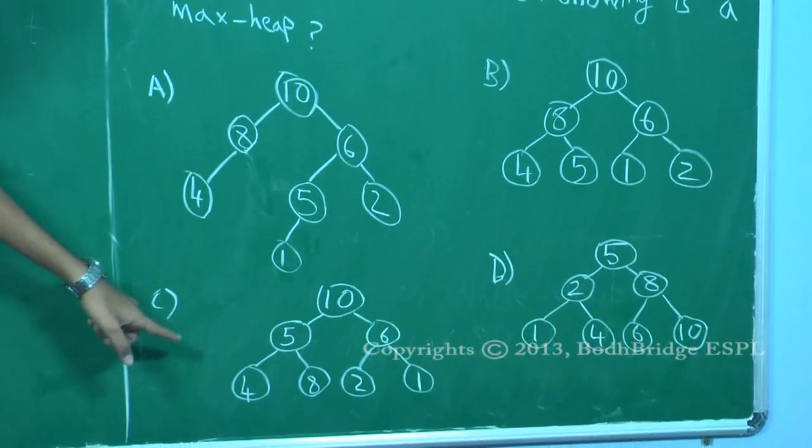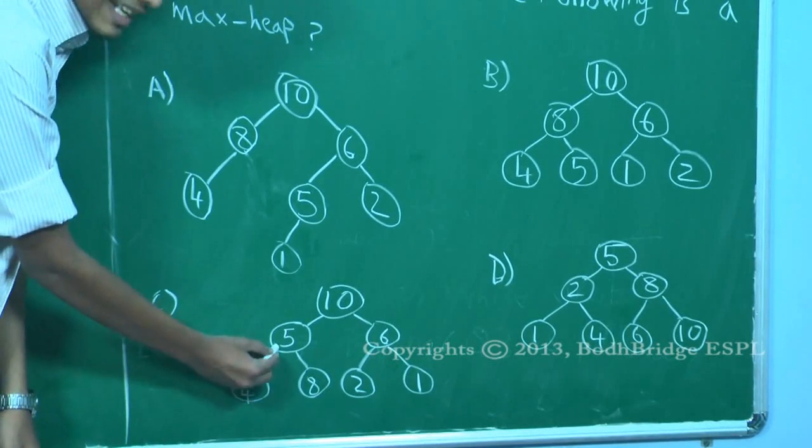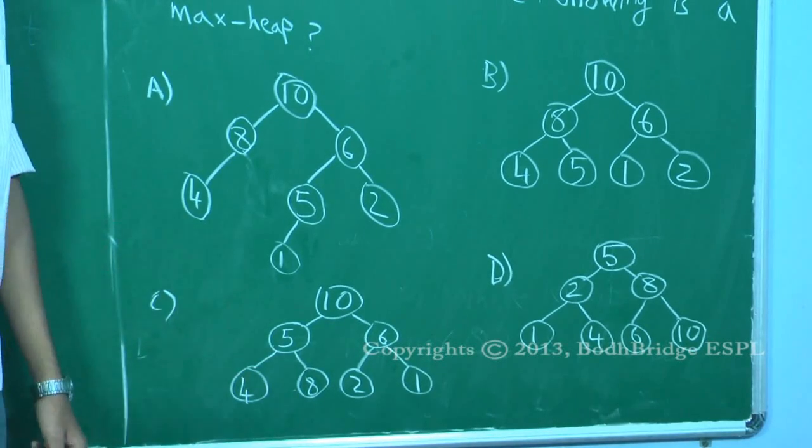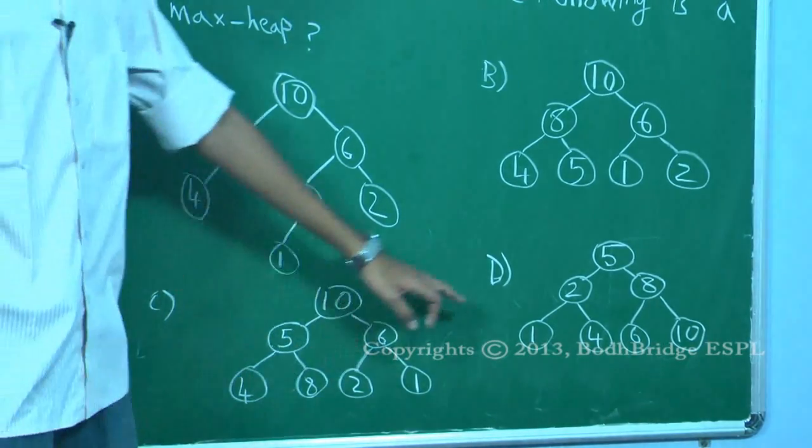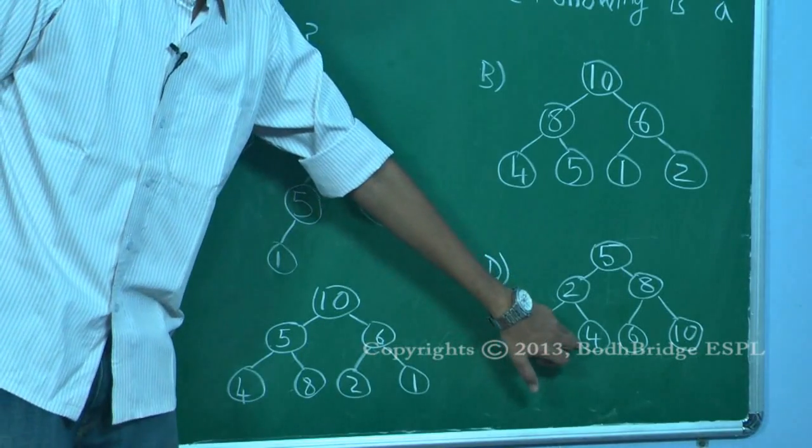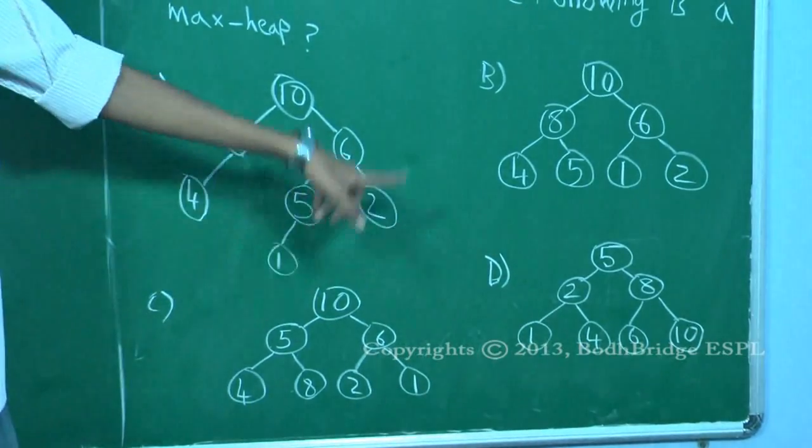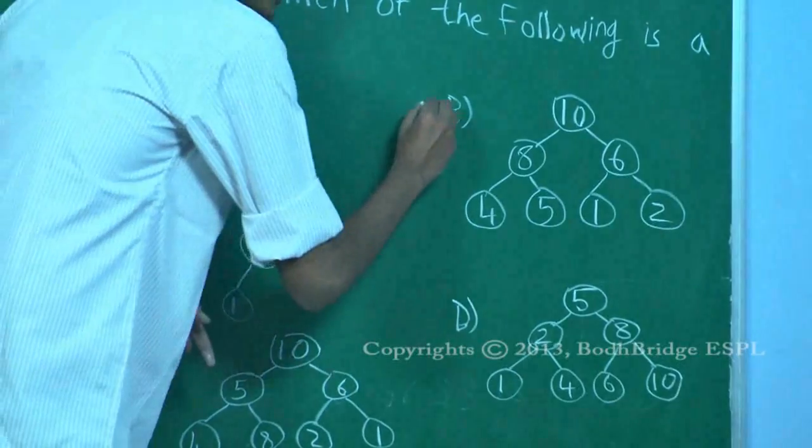Option C does not satisfy the heap property because 5 is lesser than 8. Every parent should be greater than or equal to its children. And same here, 2 is lesser than 4. So option C, D are not max heaps. Option B is a max heap. Therefore option B is the right answer.